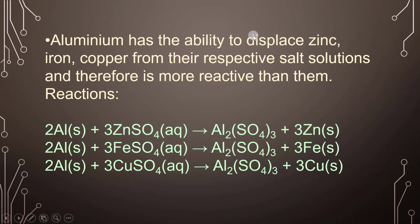Aluminium has the ability to displace zinc, iron, and copper from their respective salt solutions, and therefore aluminium is more reactive than all of them. The products are: 2Al + 3ZnSO₄ → Al₂(SO₄)₃ + 3Zn; 2Al + 3FeSO₄ → Al₂(SO₄)₃ + 3Fe; 2Al + 3CuSO₄ → Al₂(SO₄)₃ + 3Cu.